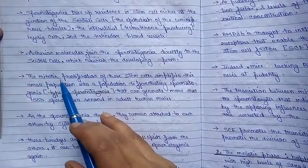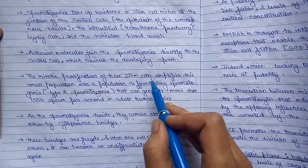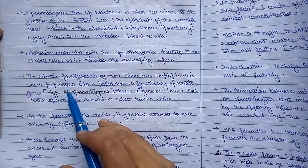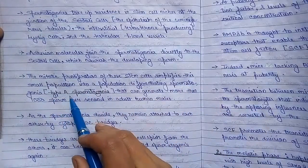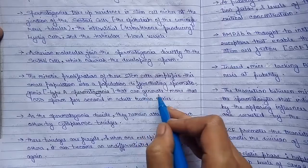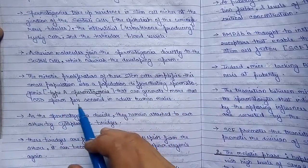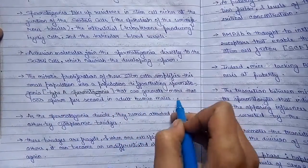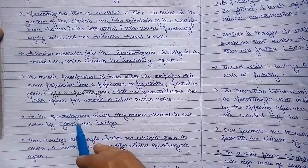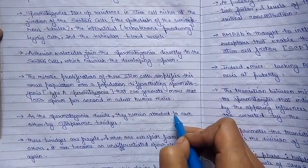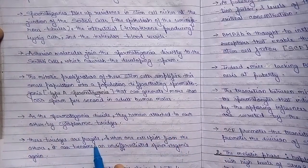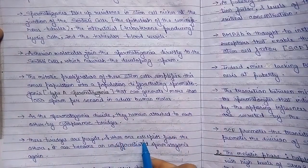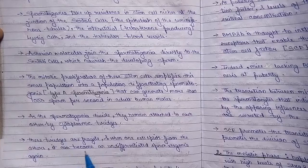The mitotic proliferation of these stem cells amplifies small populations into a population of differentiating type A spermatogonia that can generate more than 1000 sperm per second in adult human males. As the spermatogonia divide, they remain attached to each other by cytoplasmic bridges. These bridges are fragile, and when one cell splits from the others, it can become an undifferentiated spermatogonium again.